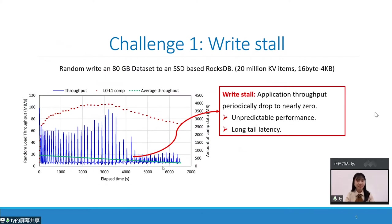To better understand the LSM tree-based KV store, we evaluate RocksDB by randomly writing an 80GB dataset and measure the random write throughput every 10 seconds. From this figure, we first observe the challenge of write stall — that is, application throughput periodically drops to nearly zero. The troughs of system throughput indicate write stalls. The dramatic fluctuation of performance and long-tail latencies go against the non-SQL system's design goal of predictable and stable performance.